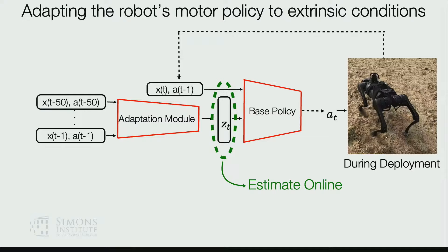That's what the adaptation module does — it takes the input and tries to estimate the Z vector. The Z itself can be estimated by another neural network operating at some meta level. The conceptual system is super simple, even though the operationalization — how you train it — is technical detail.